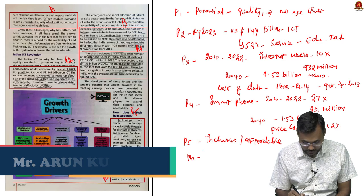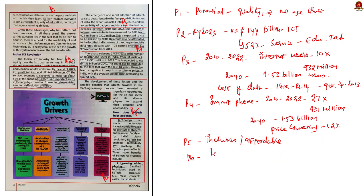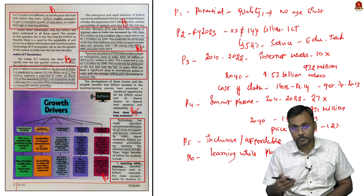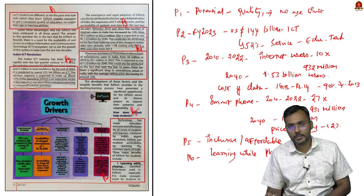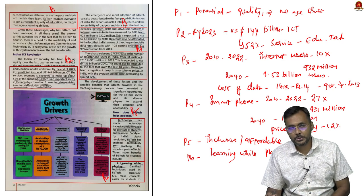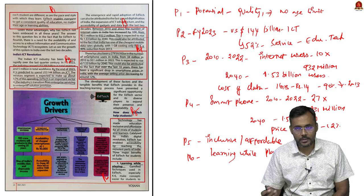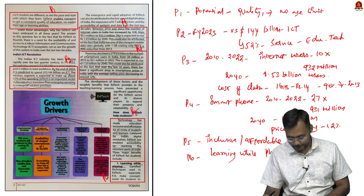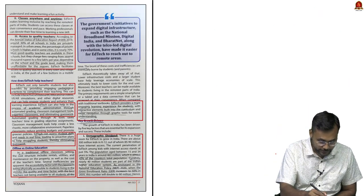Paragraph 6 discusses learning while playing as an advantage. There is no physical requirement for students to sit in a class, so they can learn wherever they want. Also, pedagogies — teaching through models and demonstrations — can be effectively delivered through technology-based education.